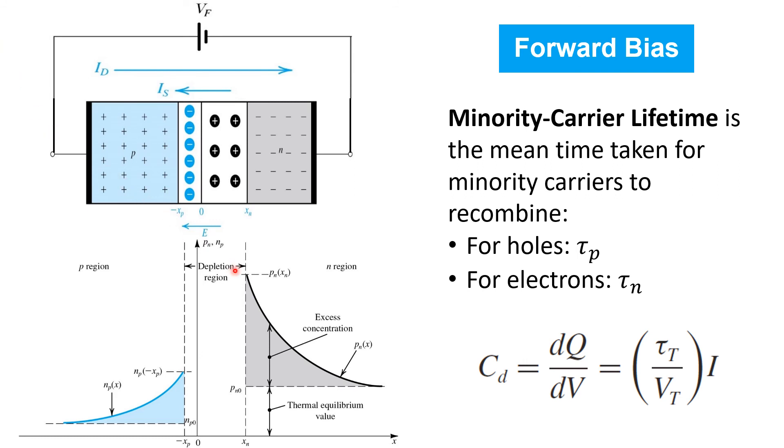How far this reservoir of minority carrier charge extends away from the P-N junction and thus, ultimately, the total amount of charge being stored in these reservoirs depends on how quickly the minority charge carriers recombine with the majority carriers on each side of the junction as they diffuse away from the P-N interface.